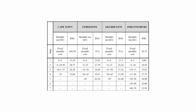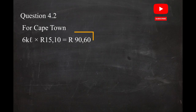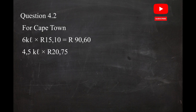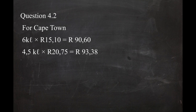In step two, the range of water consumption is greater than six kilolitres to 10.5 kilolitres. The maximum amount chargeable in this step is 10.5 − 6 = 4.5 kilolitres, at a tariff of R20.75 per kilolitre. You must find this difference because you have already been charged for the first six kilolitres in step one. The cost for step two is 4.5 kilolitres × R20.75 = R93.38.